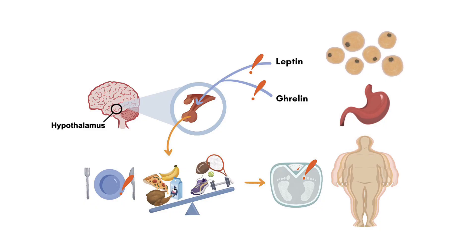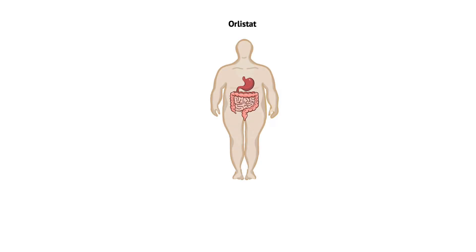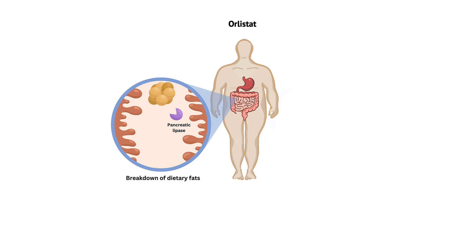Now that we have an understanding of the biological mechanisms underlying obesity, let's explore the molecular mechanisms of action of various classes of weight loss drugs, starting with Orlistat. Orlistat is a gastrointestinal lipase inhibitor that works by reducing the absorption of dietary fats in the intestines. Its mechanism of action is unique among the currently approved weight loss drugs, as it does not target the central nervous system or directly affect metabolism. Orlistat inhibits the function of pancreatic lipase, which is an enzyme responsible for breaking down dietary fats, specifically triglycerides, into smaller molecules called fatty acids and glycerol.